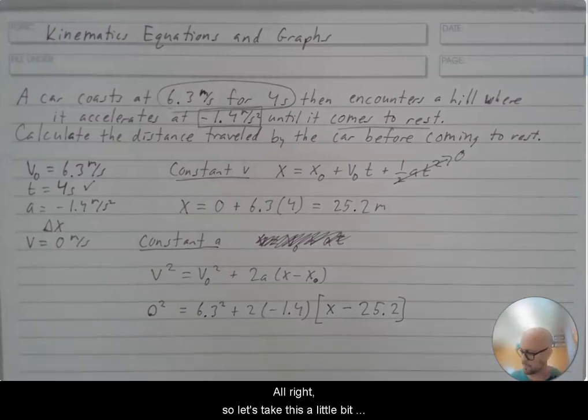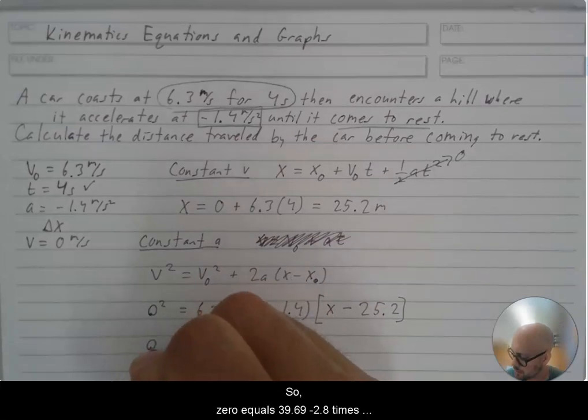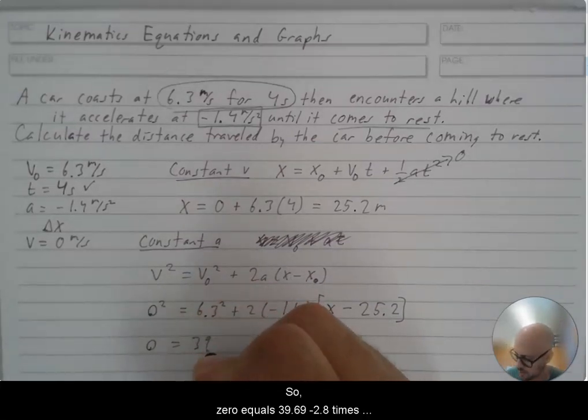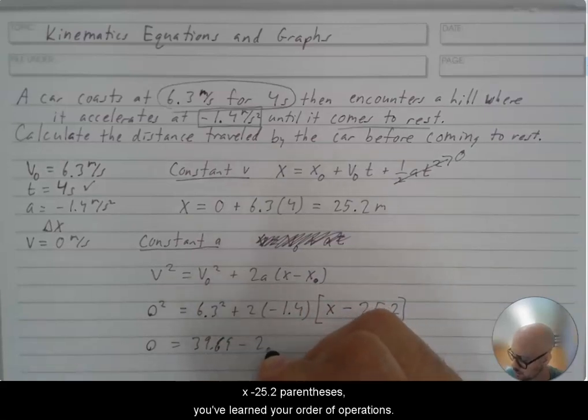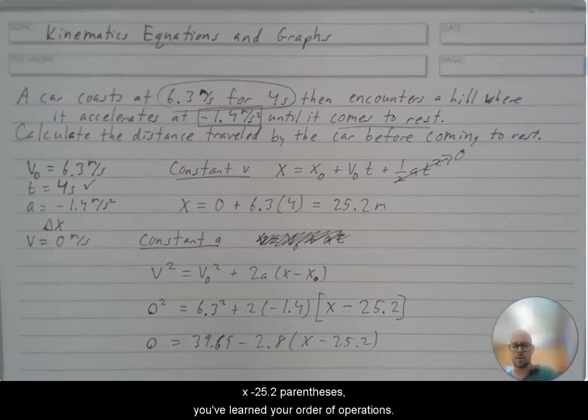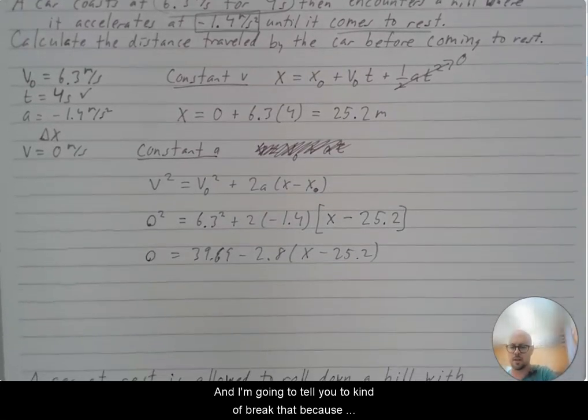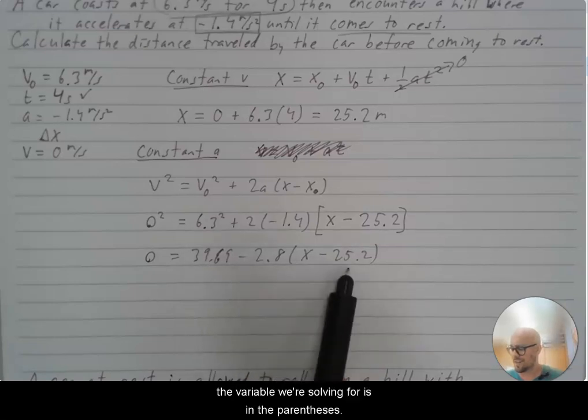All right, so let's take this a little bit faster because you've done some algebra before. So zero equals 39.69 minus 2.8 times x minus 25.2. Parentheses. You've learned your order of operations. And I'm going to tell you to kind of break that. Because the variable we're solving for is in the parentheses, I'm actually going to deal with what's outside of the parentheses first.